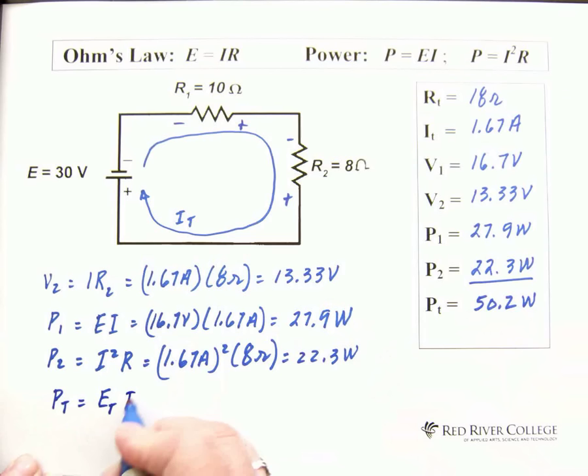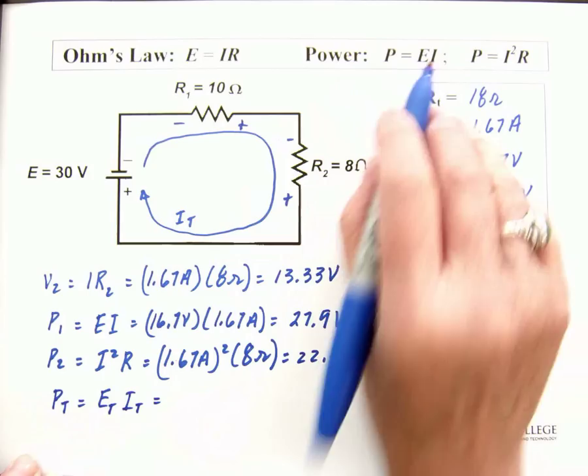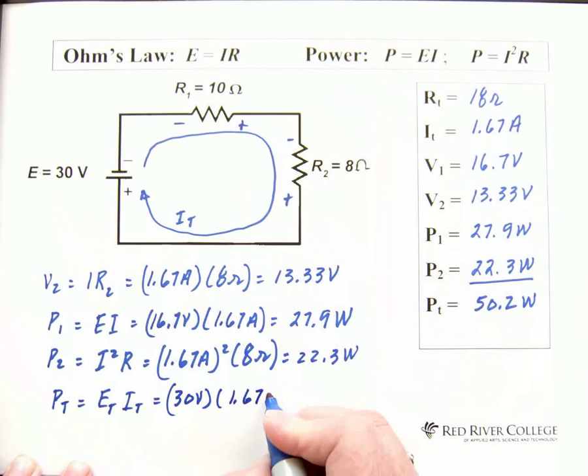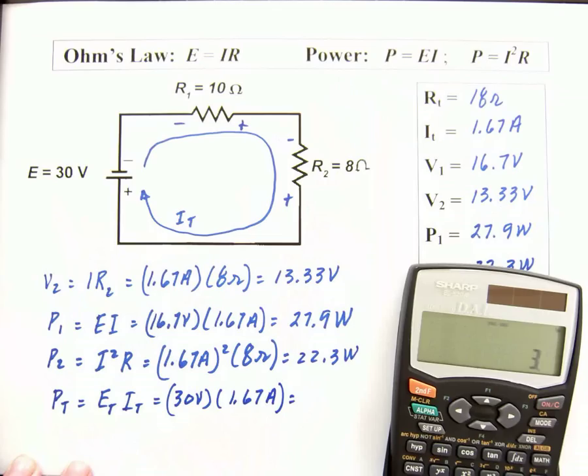Power total equals total voltage times total current. Again, power is voltage times current. So, we're going to take total voltage times total current and we'll get total power. Total voltage is 30 volts. Total current is 1.67 amps. I'm going to multiply those two together. 30 times 1.67 equals 50.1.